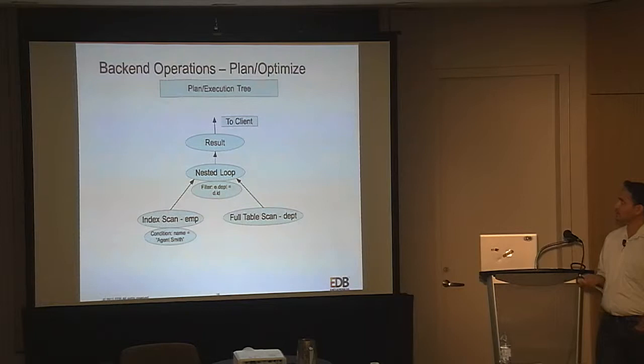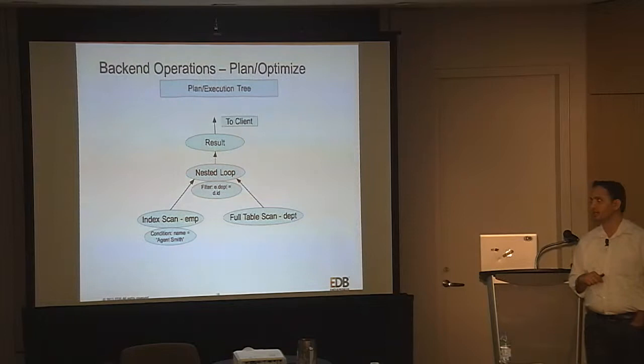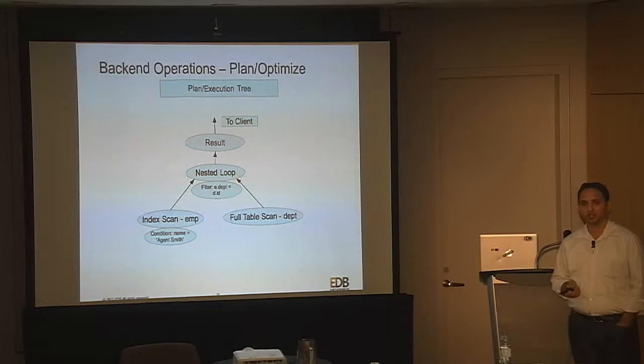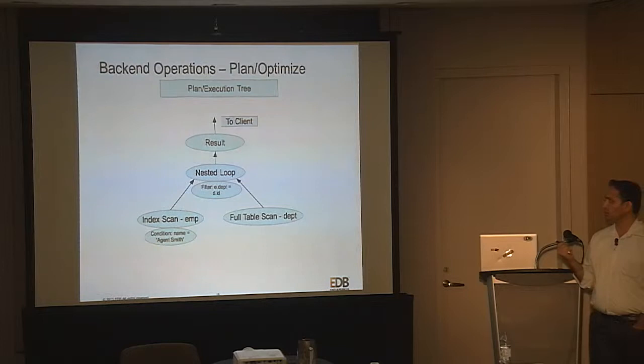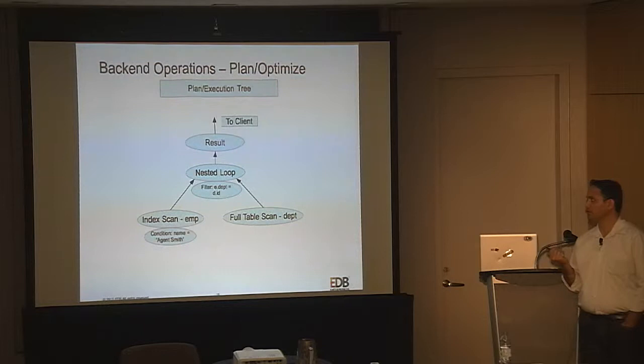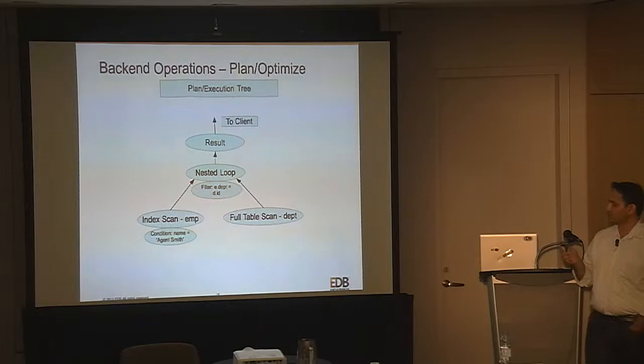This is what the plan tree or execution tree looks like — the output of the optimizer stage. The optimizer has chosen to perform an index scan on the employee table, filtering out rows that don't have the name Agent Smith, then send those to a nested loop join with a full table scan on the department table. That might be the cheaper way of accessing the department table, and the join result is sent to the client.